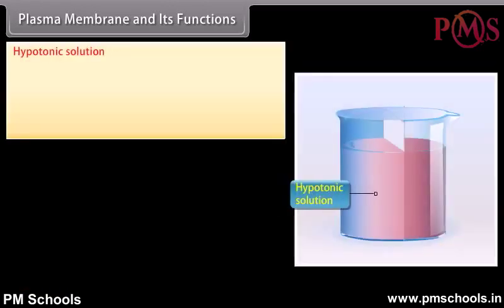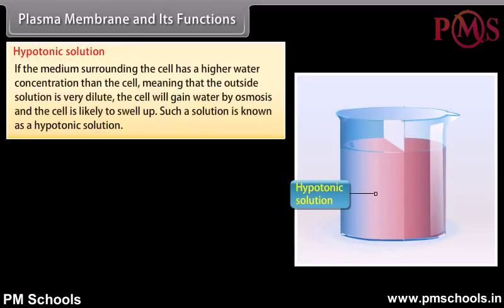If the medium surrounding the cell has a higher water concentration than the cell — meaning the outside solution is very dilute — the cell will gain water by osmosis and is likely to swell up. Such a solution is known as a hypotonic solution.